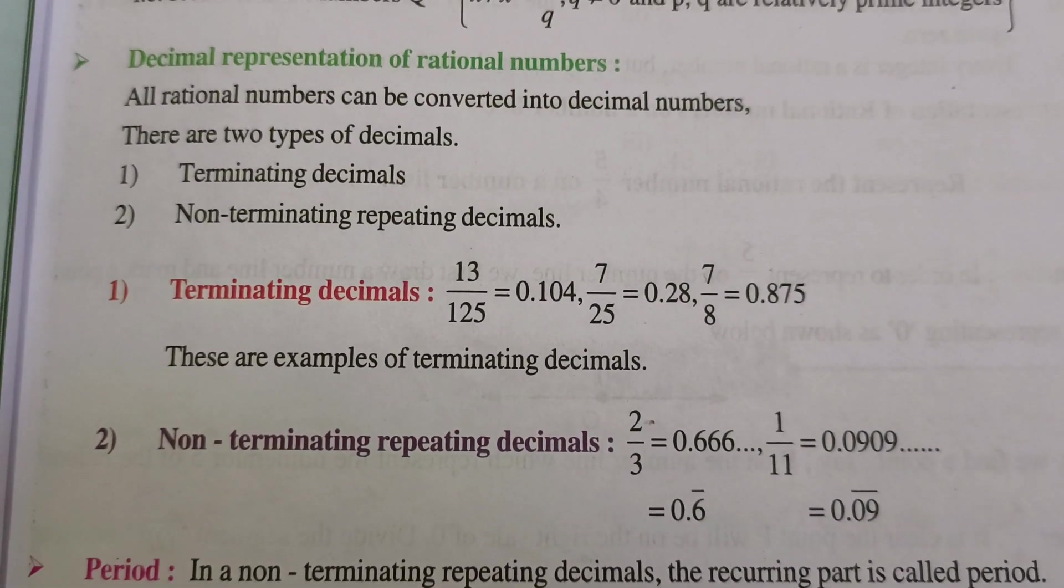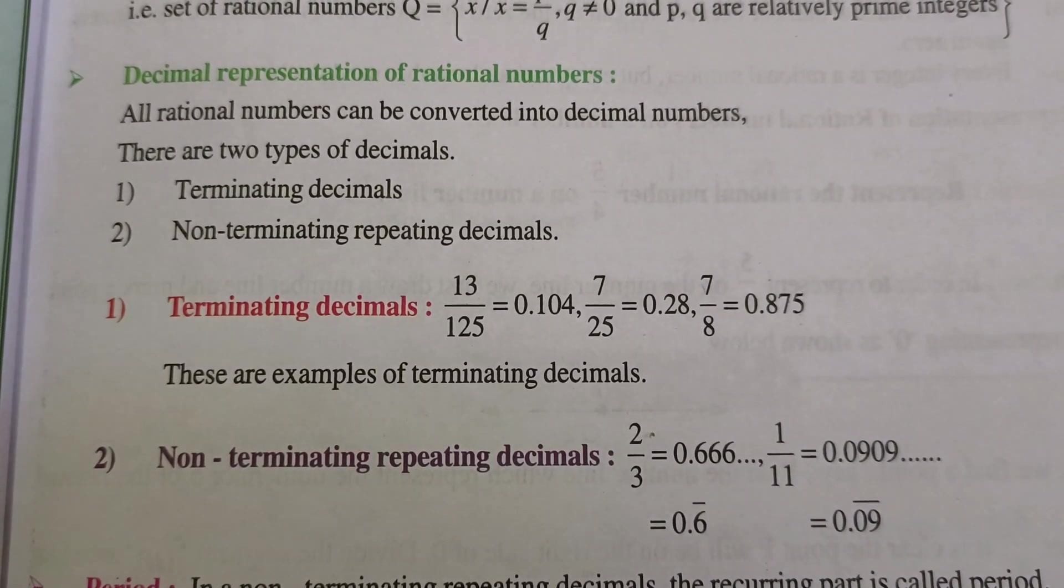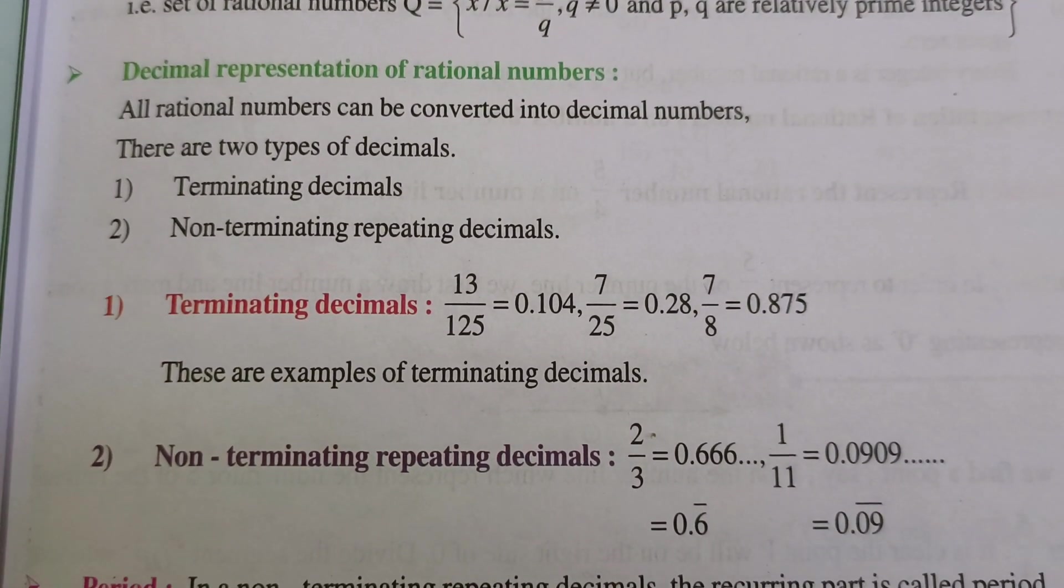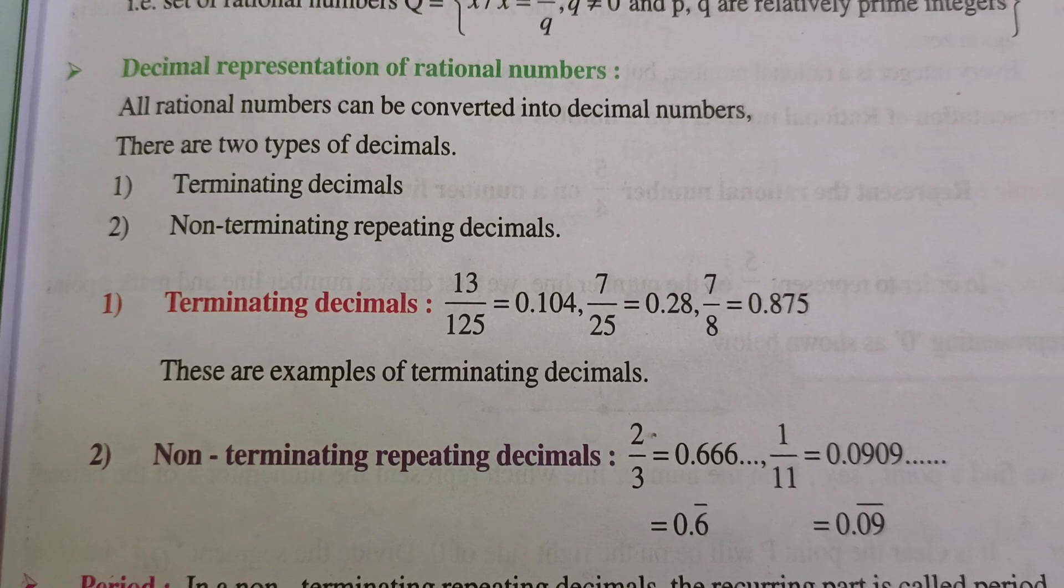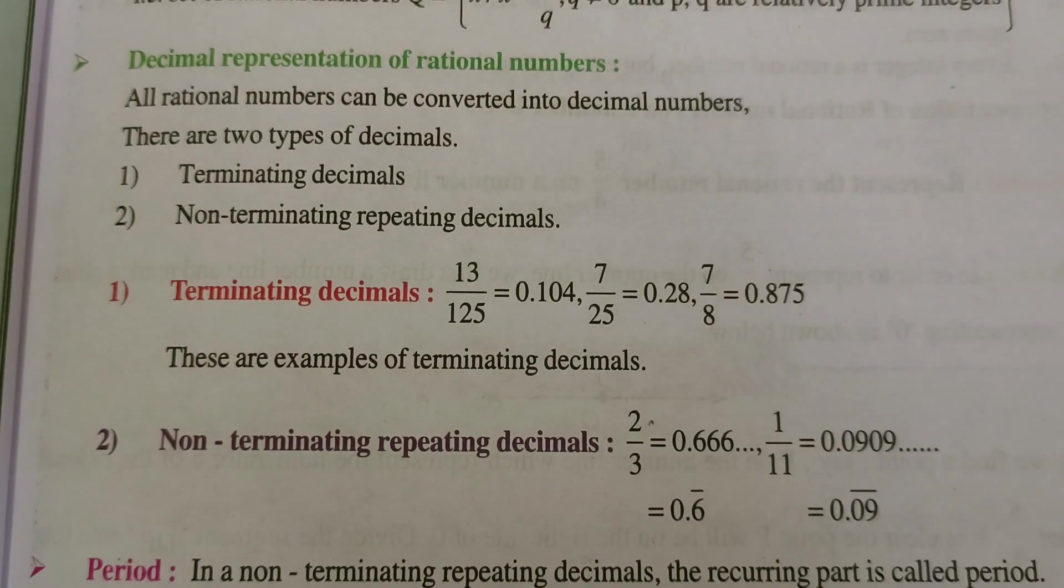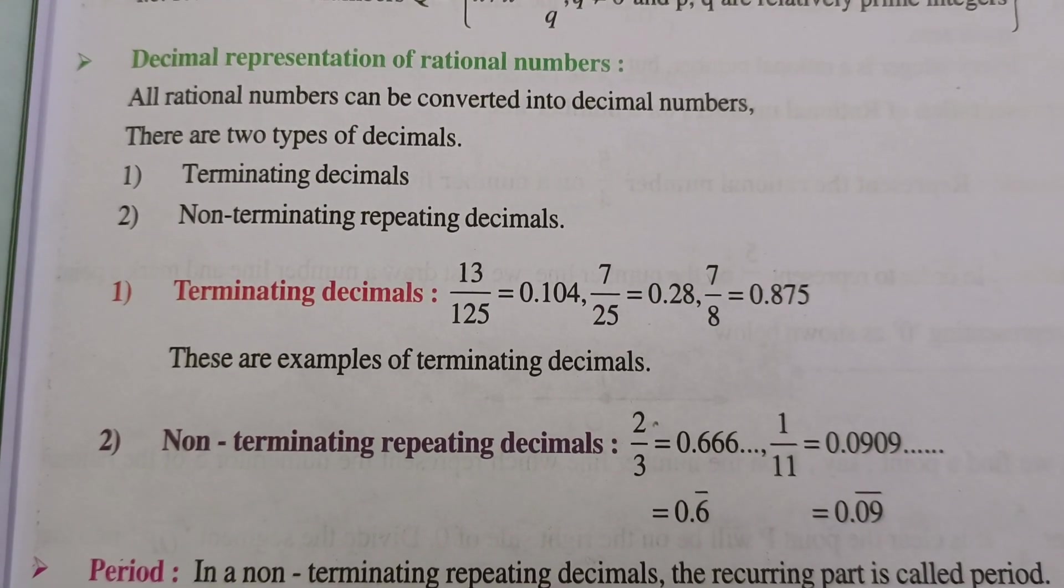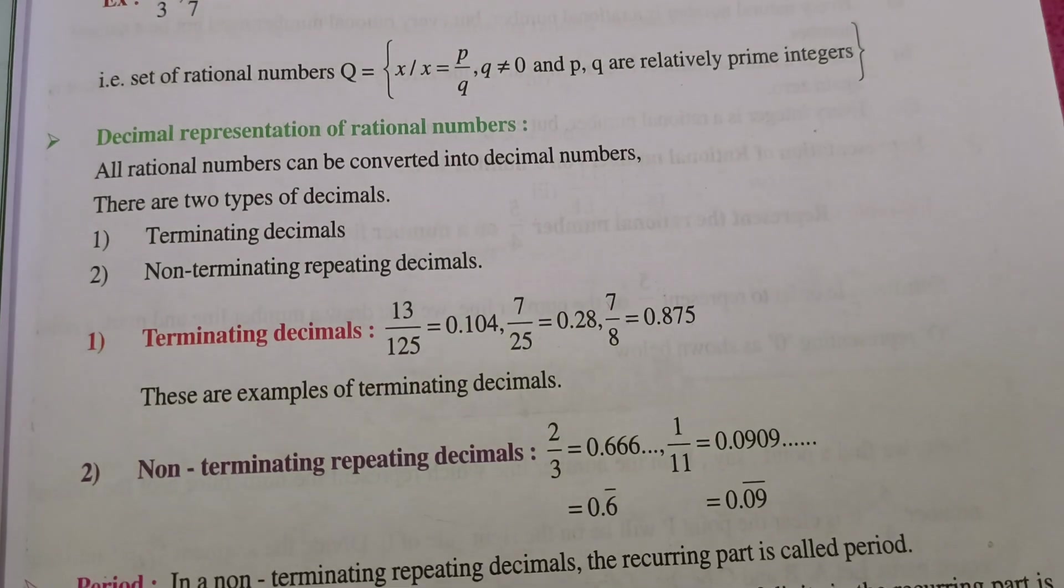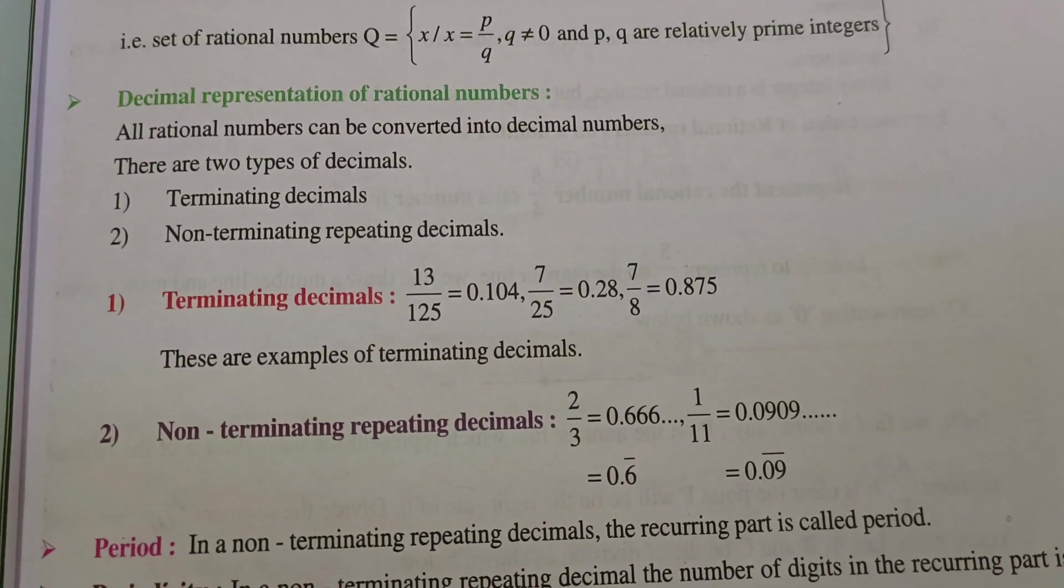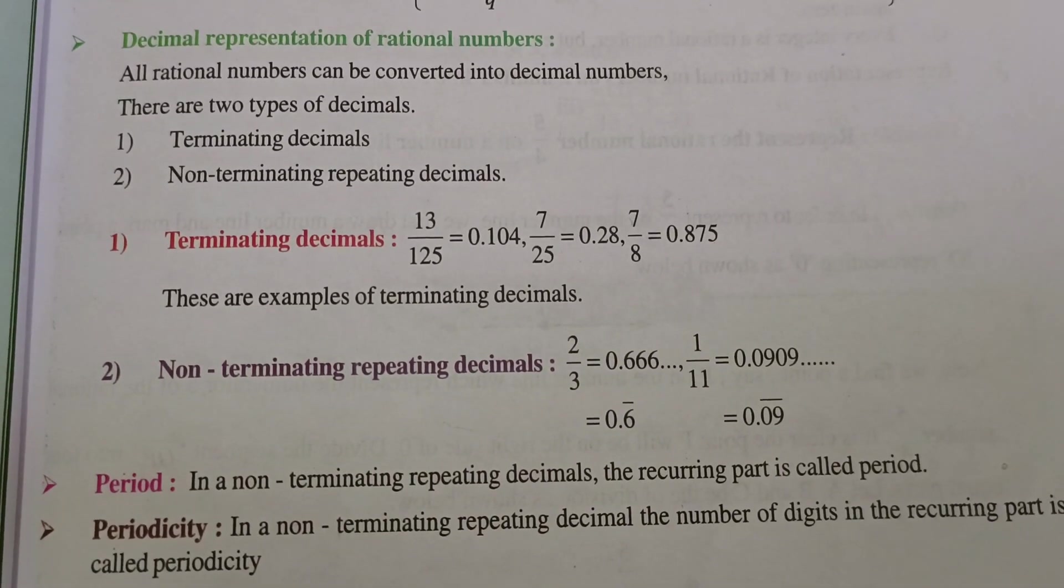Non-terminating repeating decimals: 2 by 3 equals 0.666, that is 0.6 bar, 1 by 11 equals 0.0909, that is 0.09 bar. Terminating decimals have a particular end after a decimal, but non-terminating repeating decimals don't have an end, which is continuous and infinite.